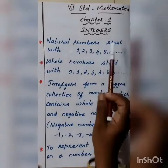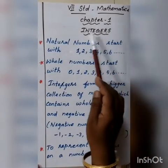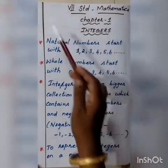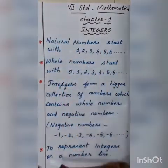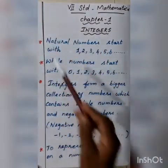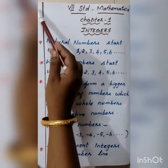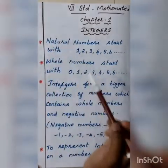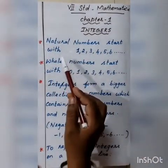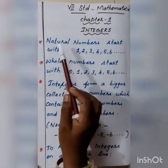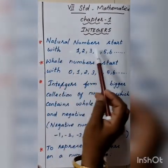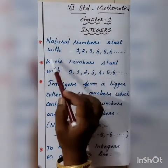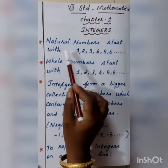Let us start our first chapter, Integers. First you draw a margin line, put the date here. First you recall something — Natural numbers. What is meant by natural numbers?